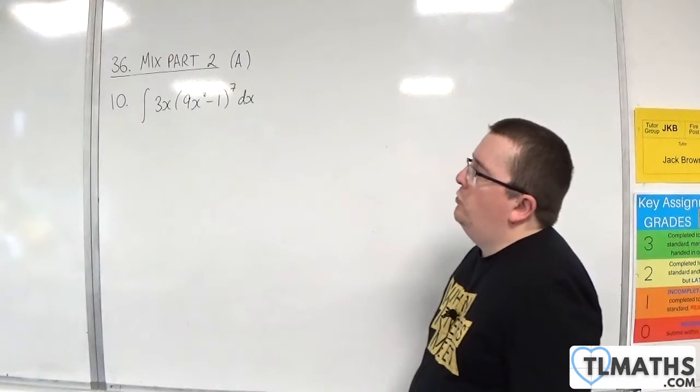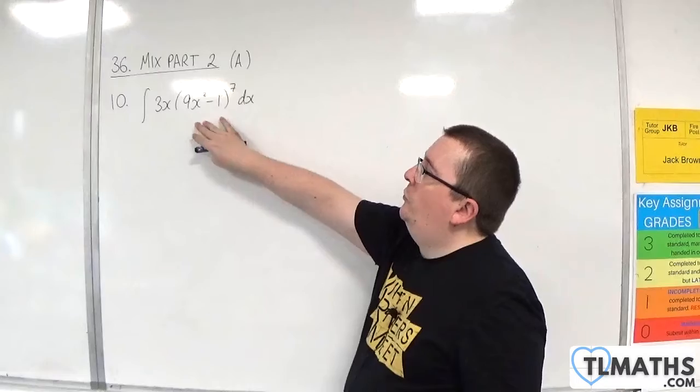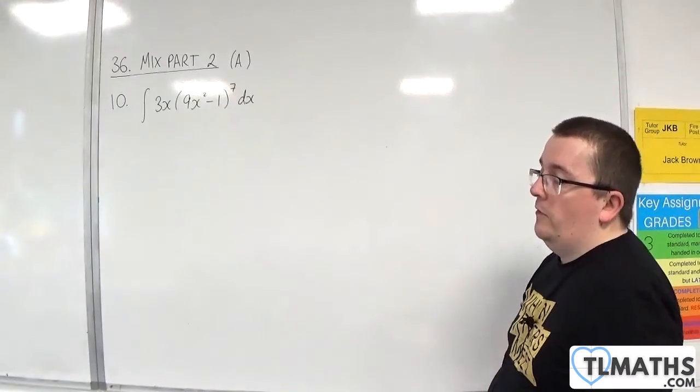This is number 10. We've got the integral of 3x times 9x squared, take away 1, to the power of 7.